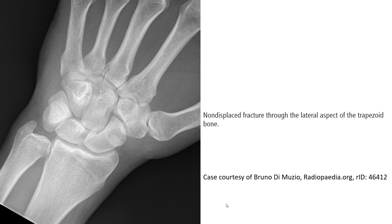And this wrist X-ray shows a non-displaced trapezoid fracture. As we can see, there is a faint, subtle lucency line across the lateral aspect of the trapezoid on this region.